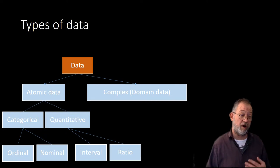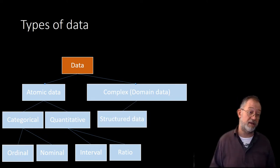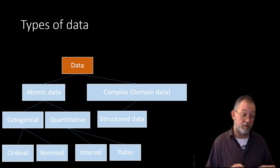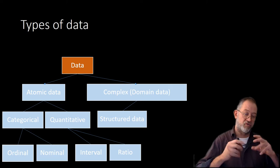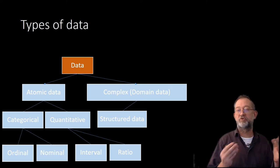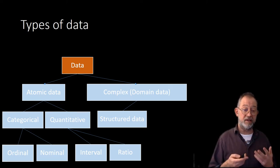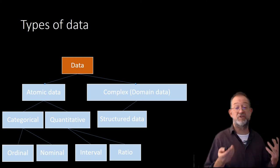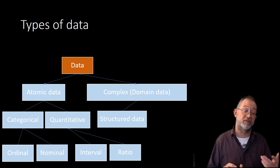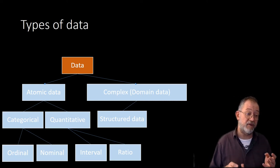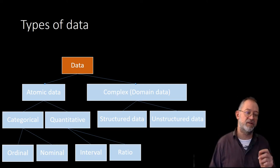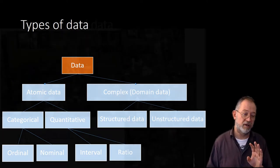Going back to complex data, we distinguish between structured data — most spatial data is structured in nature, having some form of ordering that requires domain software like a geographic information system to understand — and unstructured data, which is really difficult to process automatically and normally needs human interpretation.